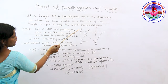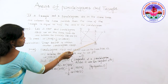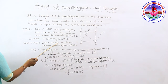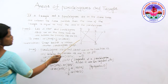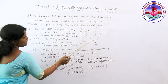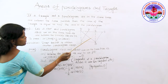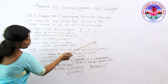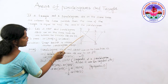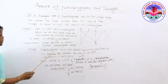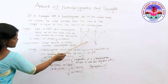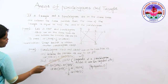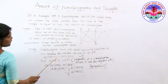Constructing BQ parallel to AP gives us parallelogram ABQP. Now we have two parallelograms — ABCD and ABQP — both on the same base AB and between the same parallels. Using our previous theorem, when two parallelograms are on the same base and between the same parallels, their areas are equal. So area of parallelogram ABCD equals area of parallelogram ABPQ. We call this equation one.